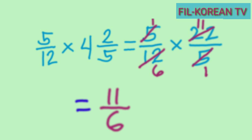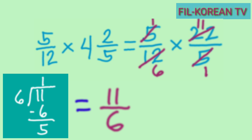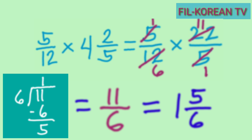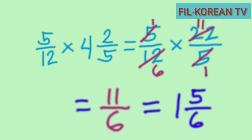We need to simplify by dividing the numerator eleven by the denominator six. Eleven divided by six equals one with a remainder of five, so eleven-sixths becomes one and five-sixths. The quotient one becomes the whole number, the remainder five becomes the numerator, and the denominator stays six. The final answer is one and five-sixths. I hope you learned from this video — see you next time, God bless!